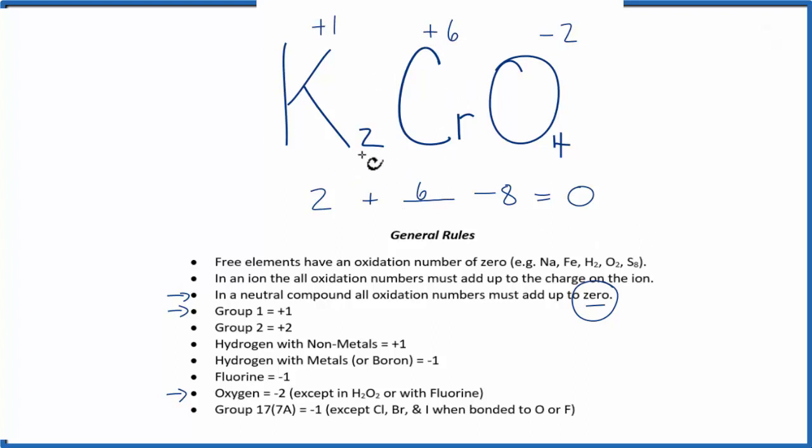So to recap, we found the oxidation numbers for the elements that we knew using these general rules, then using the fact that the neutral compound has the oxidation numbers that all add up to 0, we figured out the one we didn't know, the chromium.